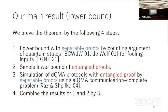Second, we show that even for entangled proofs, we can obtain a lower bound, though a weaker one. We show that any DQMA protocol with entangled proofs can be simulated by separable proofs, using the property of QMA two-party communication protocols. Combining all three steps gives us our main lower bound.